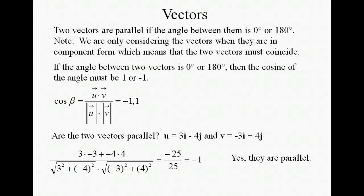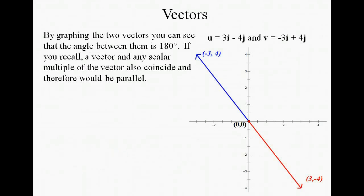Let's go ahead and put our two vectors on the coordinate plane and verify this. You can see that the two vectors form a straight line and that the angle between them is 180 degrees. We can also find vectors that are parallel to a vector by doing any scalar multiple of the vector. Any scalar multiple will coincide with the vector and will run in the same direction unless you're multiplying by a negative scalar. It will have an angle of 0 if it's a positive scalar between the two vectors.